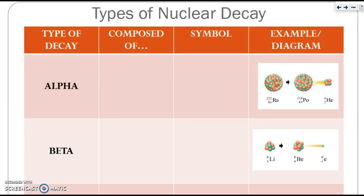Let's discuss the different types of nuclear decay. The first type of decay is an alpha particle. It is composed of two protons and two neutrons, so it is usually written as the symbol for helium. In alpha decay, we start with what we call the parent isotope — it's one thing, and it's turning into two. One of the two pieces will be the alpha particle.